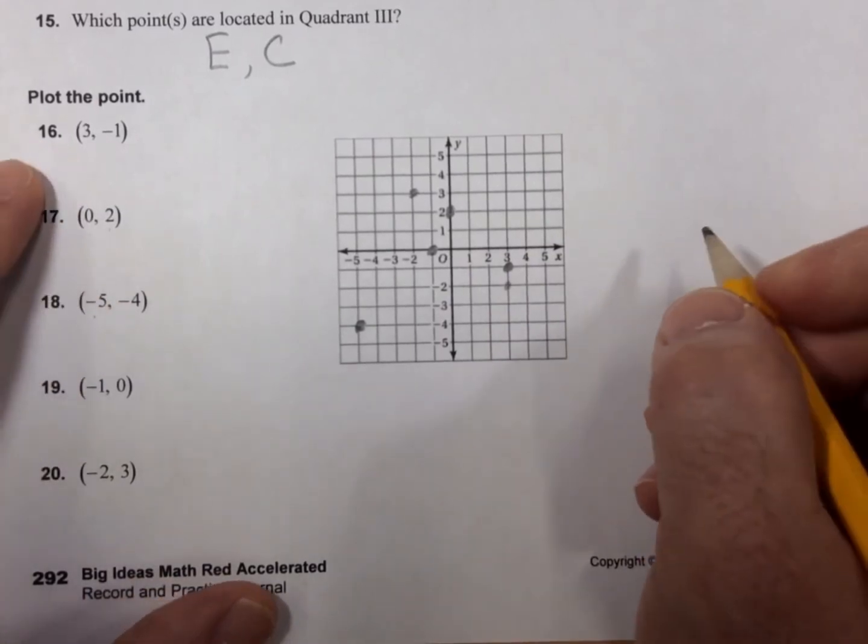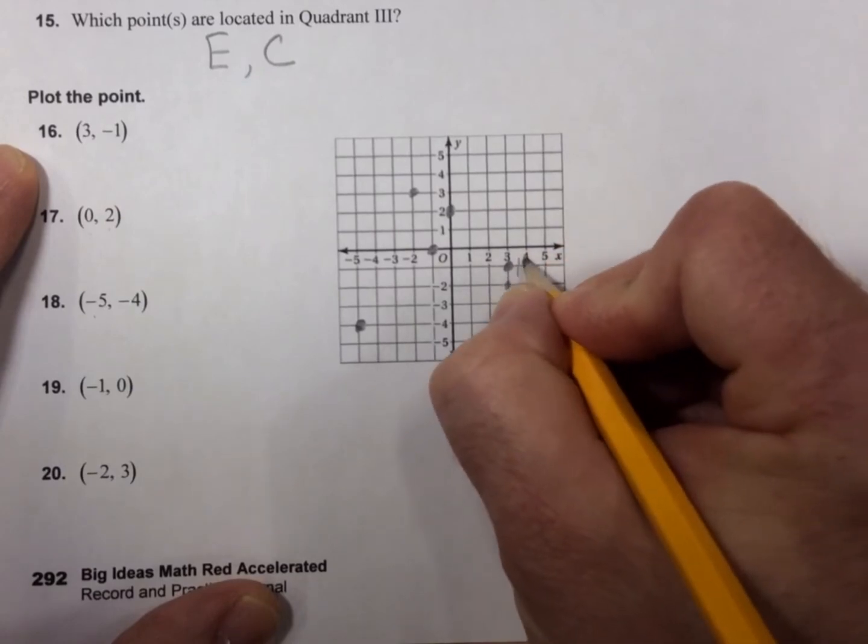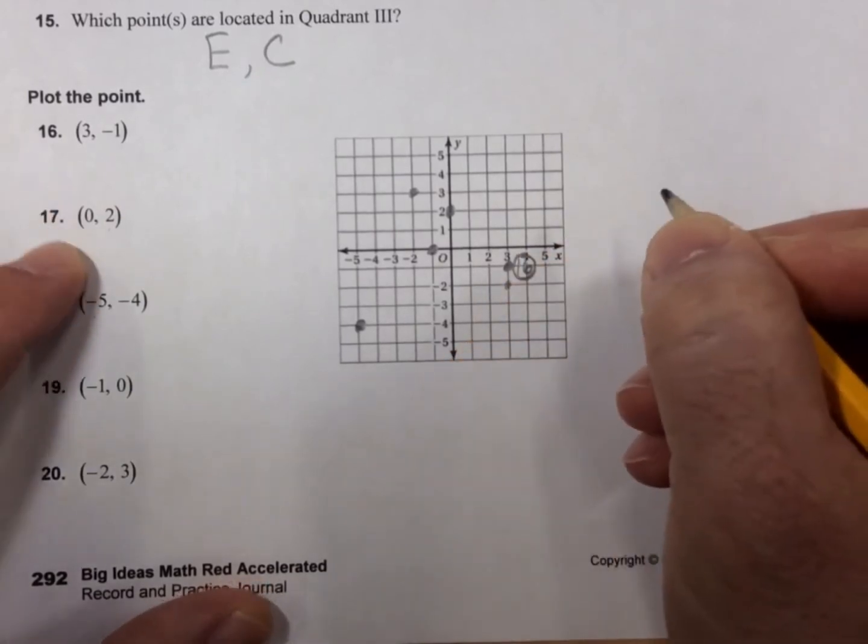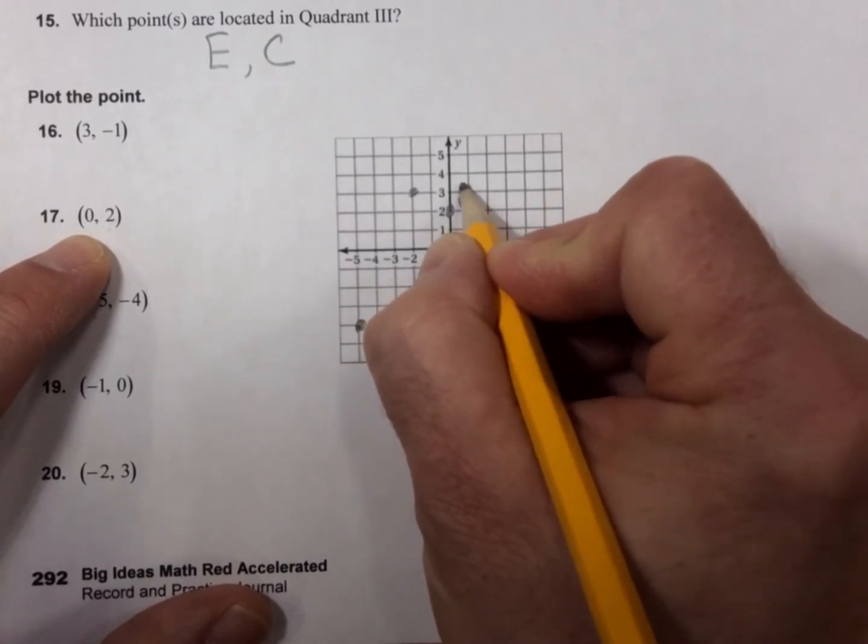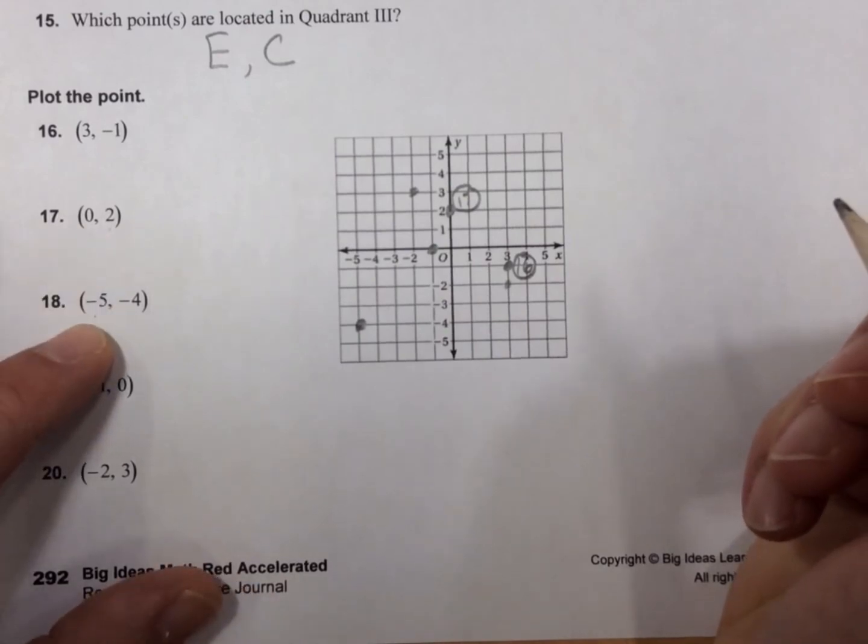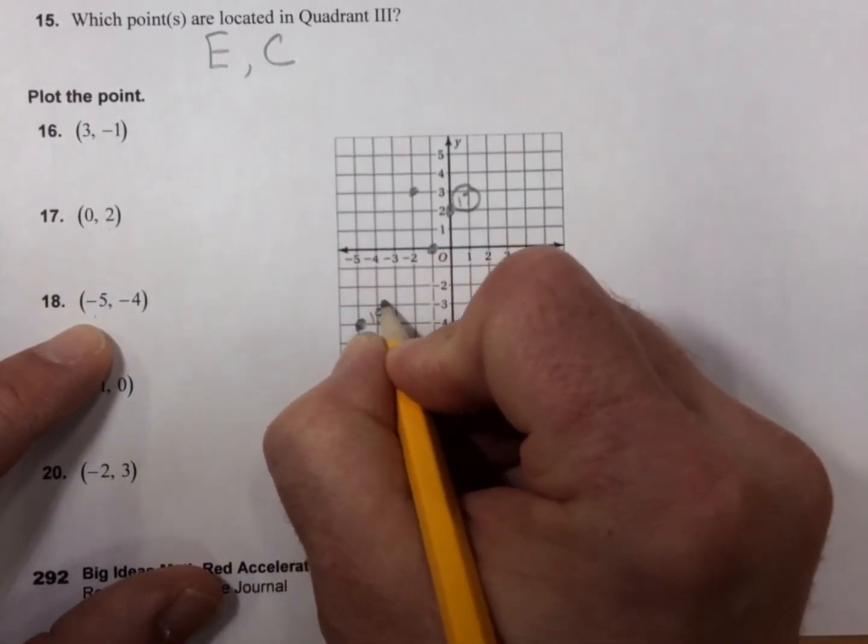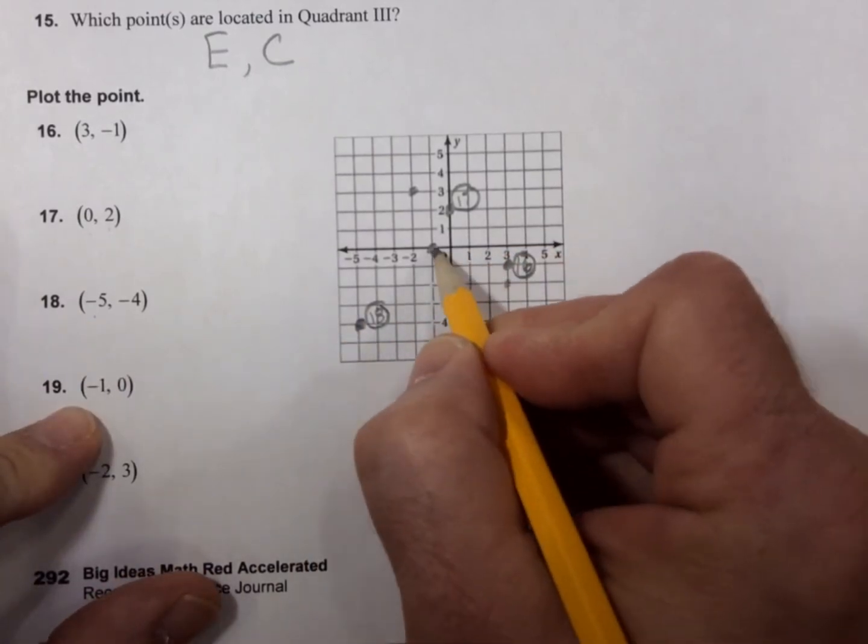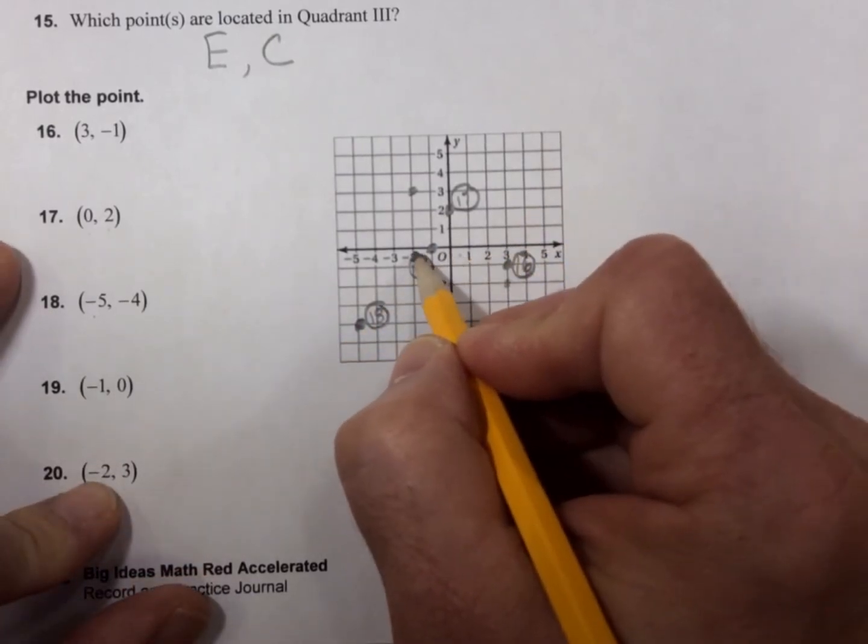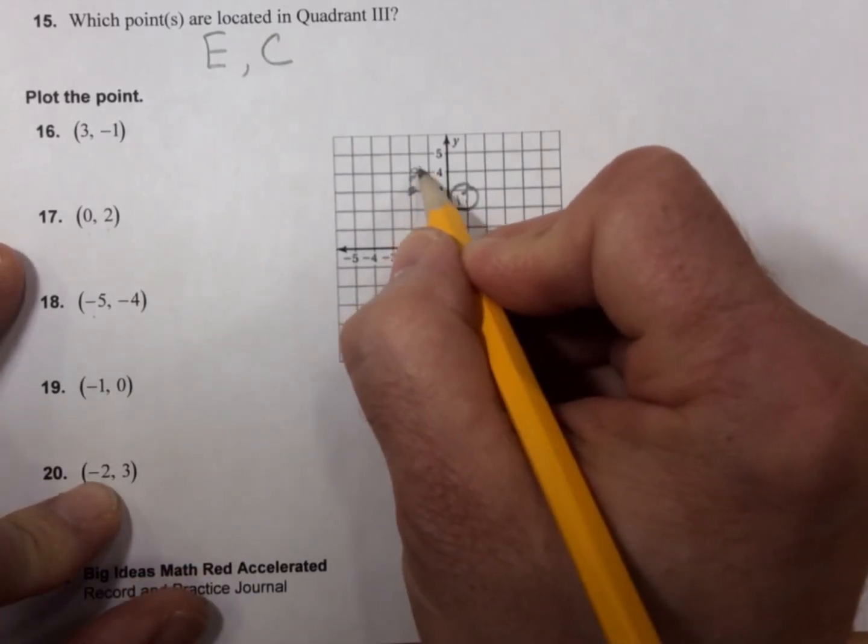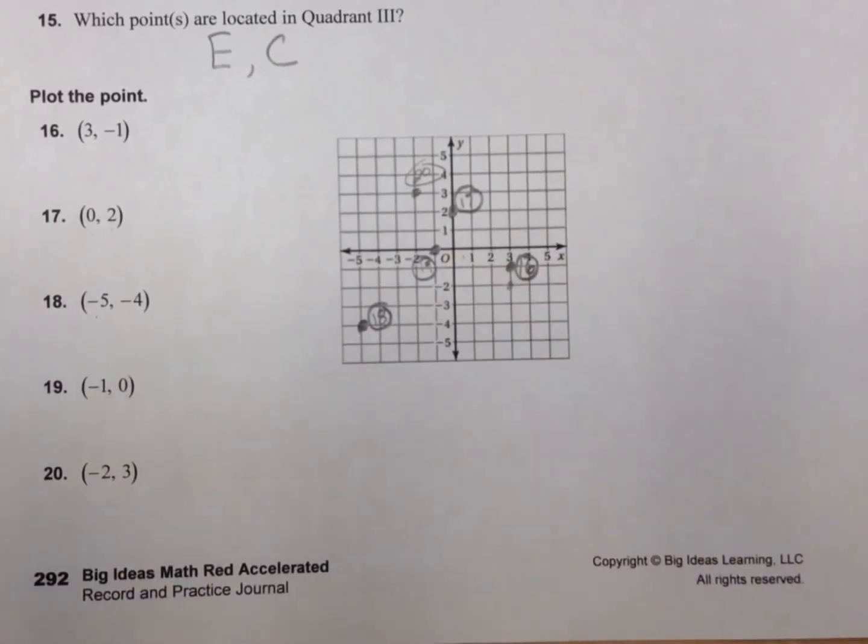And if we wanted to label these, which is usually a good idea, (3, -1) is right here. That would be number 16. (0, 2) would have been right here. That's number 17. (-5, -4), that's 18. (-1, 0), right here, 19. And (-2, 3) is 20. And here's that stray spot I accidentally put. Very good. Excellent.